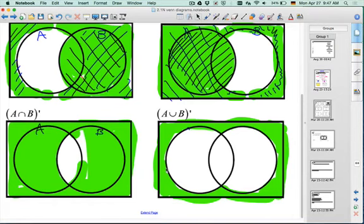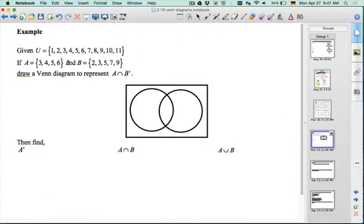All right, so next we move on to something where we have some elements. In this example, the universal set includes the integers from 1 to 11. It gives you the subset A, which is the integers 3 to 6, and the subset B, which is the integers 2, 3, 5, 7, 9.